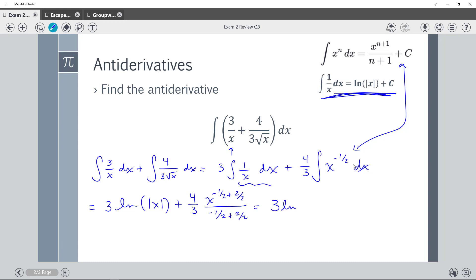So I end up with 3 ln of x plus 4 thirds. x to the 1 half plus 2 over 2, well that's going to be 1 half. And then the bottom will be 1 half. So I'm left with 3 ln of absolute value of x plus 4 thirds.